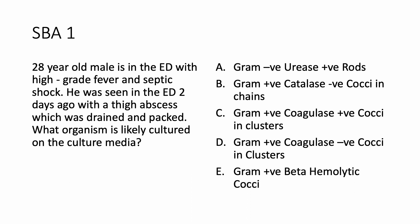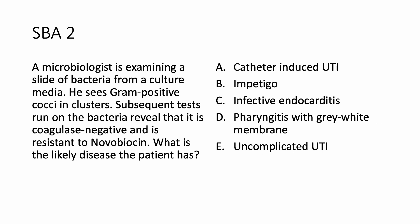Now question number two. A microbiologist is examining a slide of bacteria from a culture media. He sees gram-positive cocci in clusters. Subsequent tests reveal the bacteria is coagulase-negative and resistant to novobiocin. What is the likely disease the patient has? Options: catheter-induced UTI; impetigo; infective endocarditis; pharyngitis with grey-white membrane; uncomplicated UTI.